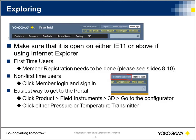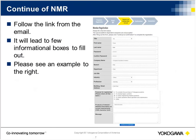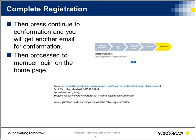You click the member login and sign in. To do new member registration, you click that you need a new registration and put your email in. It will send you an email with a link. Click on that link and it will take you to the next page. Fill out the form and submit it. You'll get a confirmation email and will be officially registered. Note that it does not automatically log you in after registration — you have to go back and log in manually.